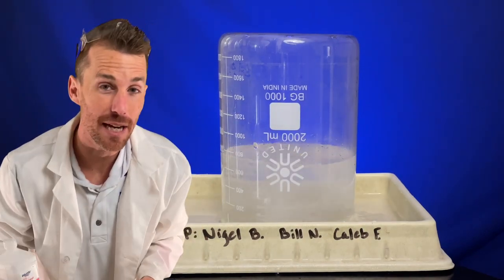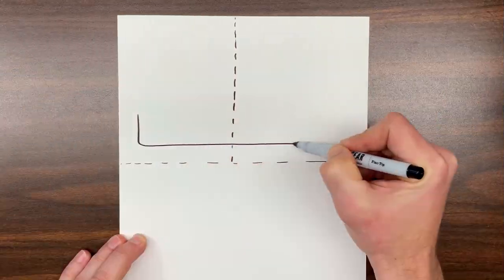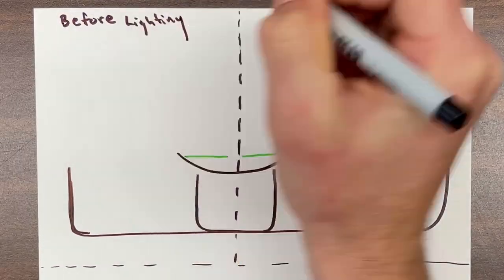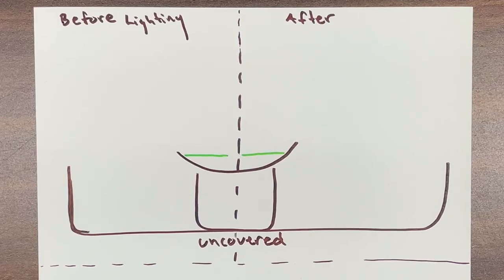So an initial explanation might look a little like this. We have the tray, beaker, and lens with isopropyl alcohol. Before lighting, the alcohol is on the left. After lighting, it's on the right.